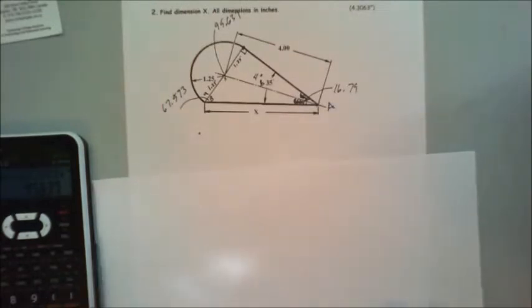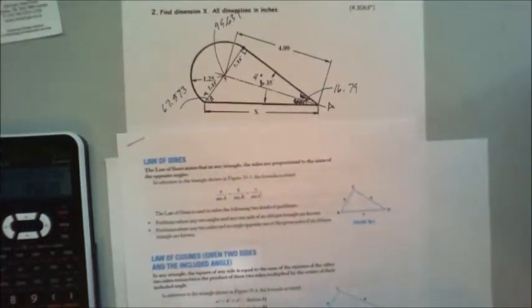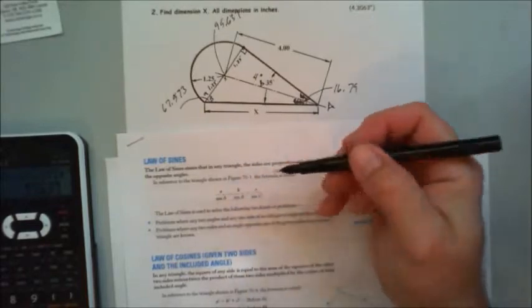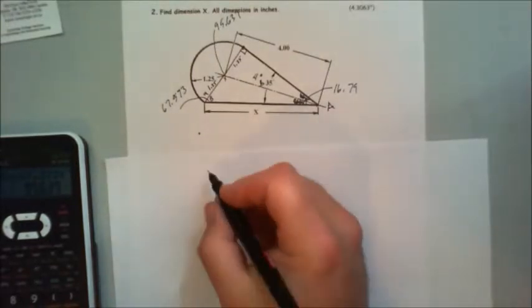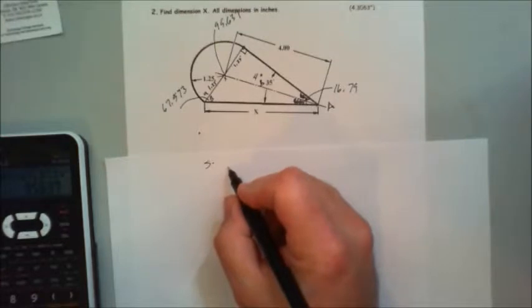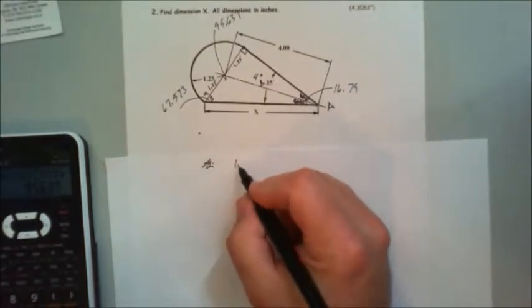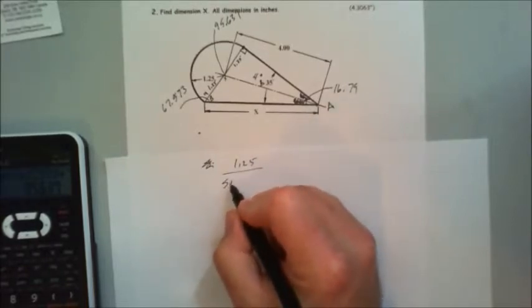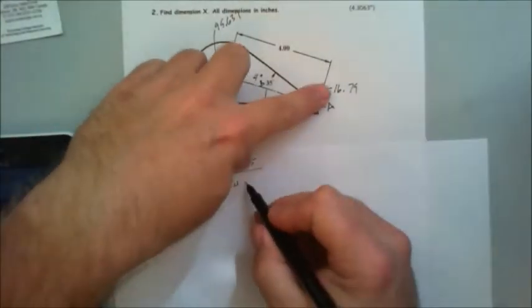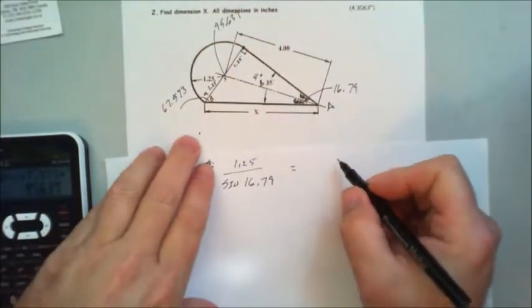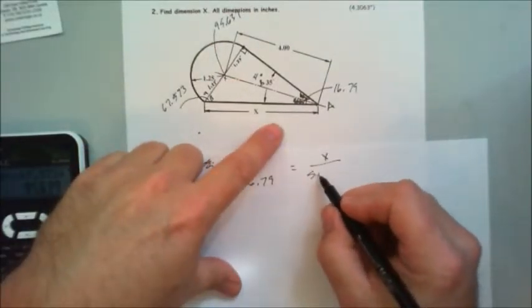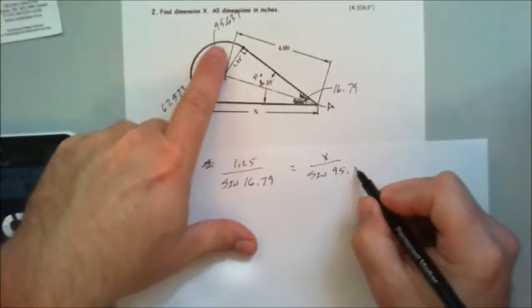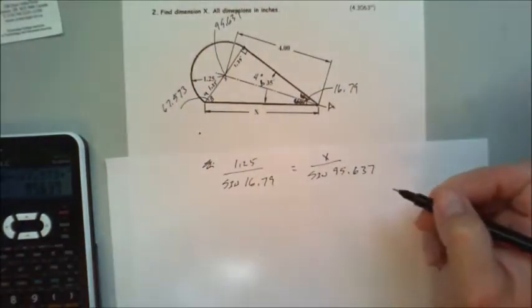Time for another fresh piece of paper. We're going to use the sine law again. Hello, Mr. Sine Law. We're going to use our A which is our A here and we're going to use X. You can say B if you want. So we're going to go 1.25 over sine 16.779 equals X, and then we're going to say sine 95.637.